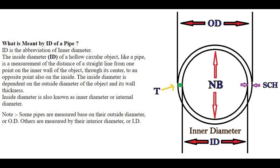The inside diameter of a hollow circular object like a pipe is a measurement of the distance of a straight line from one point on the inner wall through its center to an opposite point also on the inside, as shown in the diagram. The inside diameter is dependent on the outside diameter and its wall thickness. Inside diameter is also known as inner diameter or internal diameter.